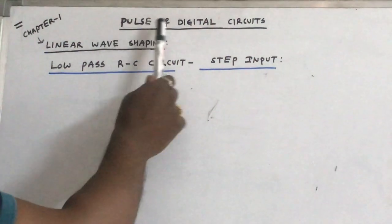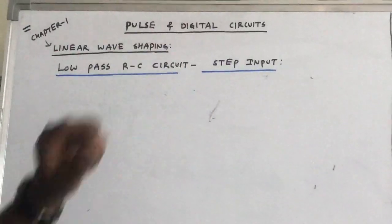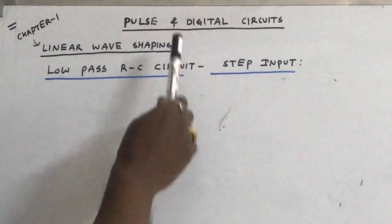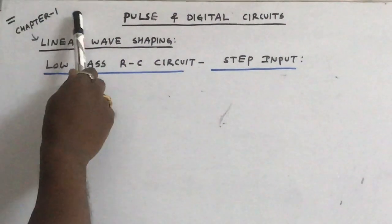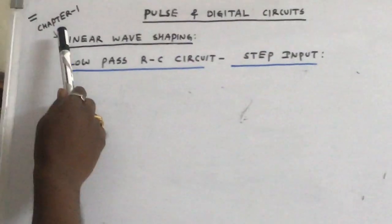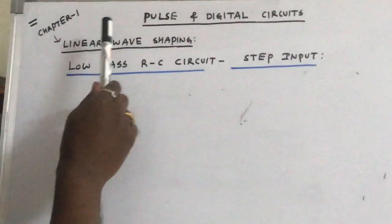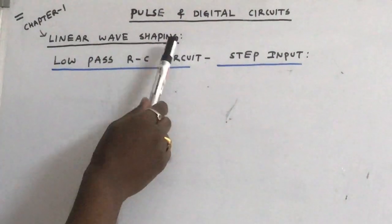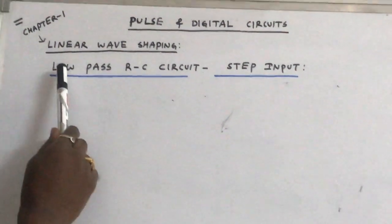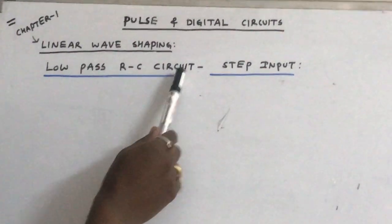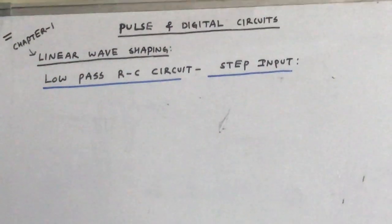Welcome to the series of video lectures on Pulse and Digital Circuit subject. We are discussing Chapter 1. The name of the chapter is Linear Wave Shaping. Today in this chapter we will see the response of RC low pass circuit with step input.